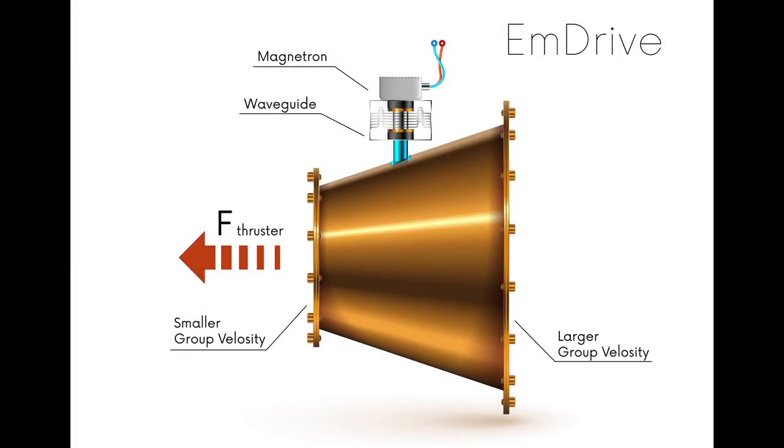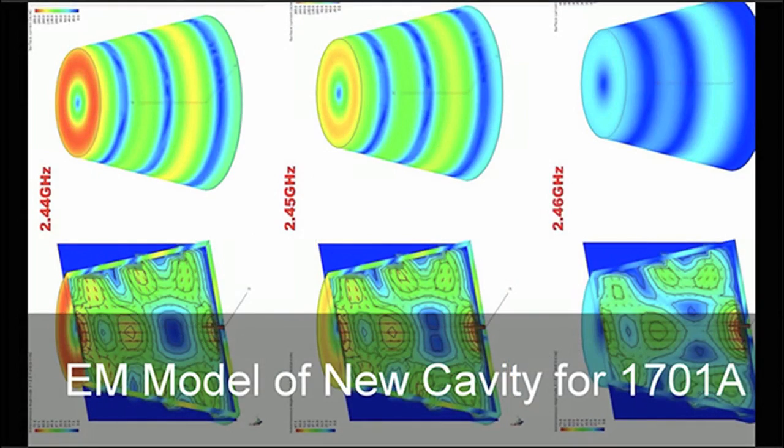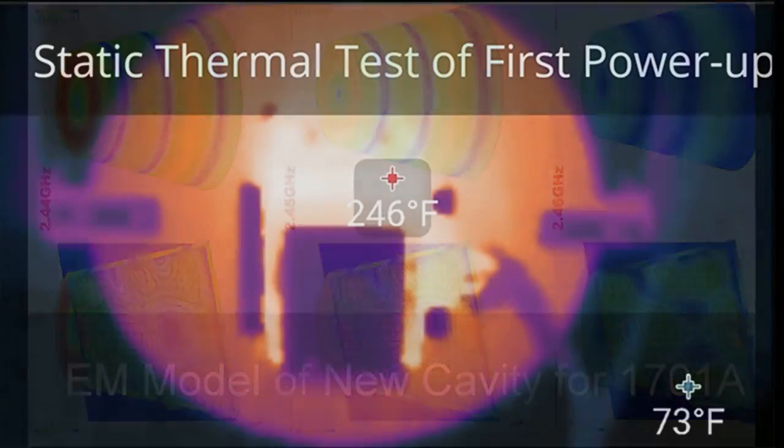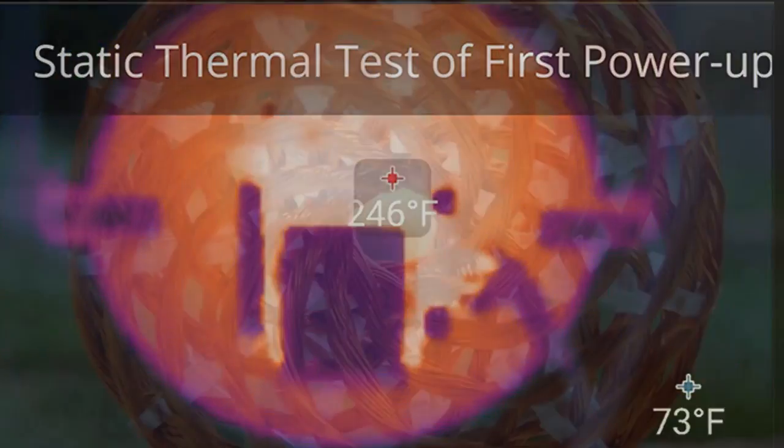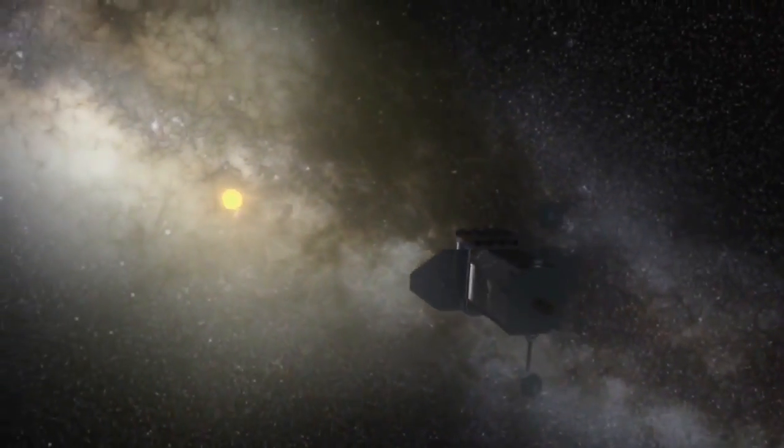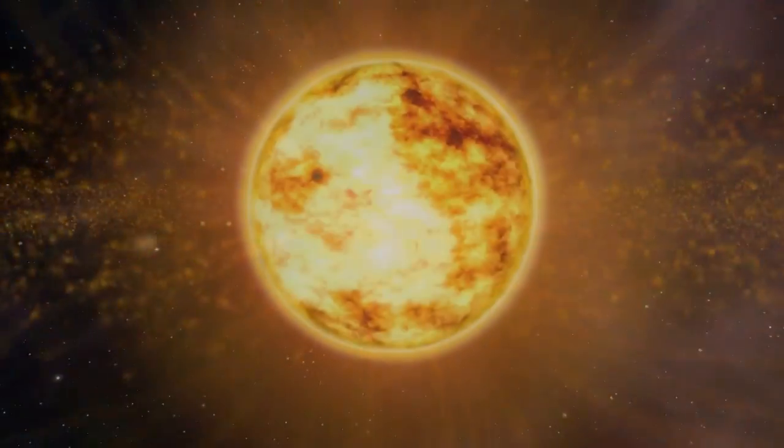An EM drive uses electricity to generate microwaves inside a concave cavity to create thrust on the other end. By using the heat generated from our EM drive in conjunction with several other technologies, we can rectify our energy into a perpetual thrust engine giving us endless energy to travel to our neighboring star.